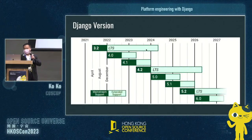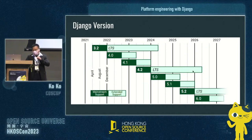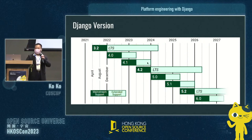The current version of Django is 4.2, and this is an LTS version, which means it will be supported until 2026. So if you want to start a Django project, you can use version 4.2.